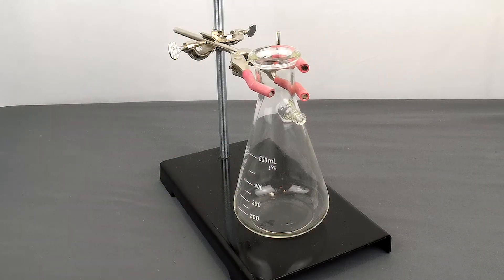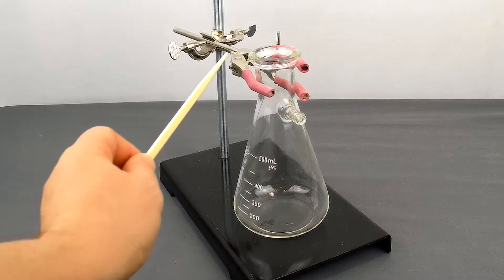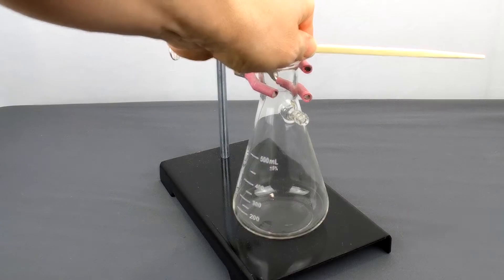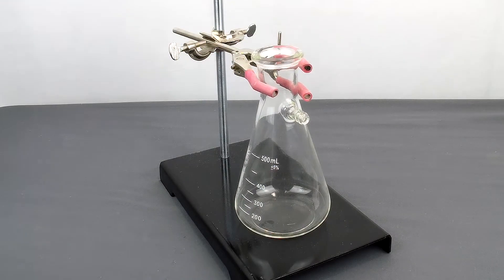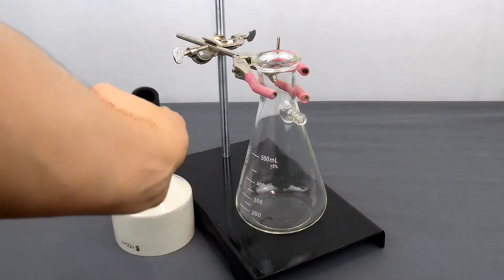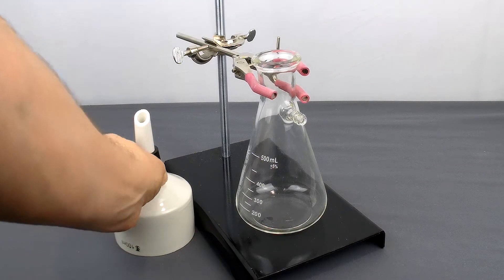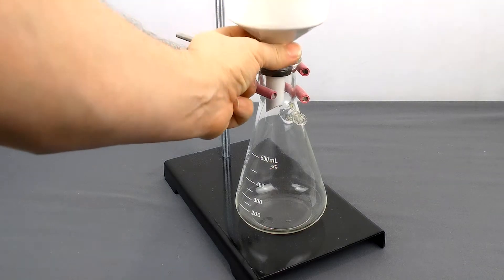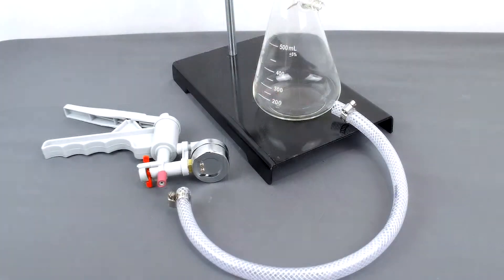The setup is very straightforward. We recommend a heavy support stand and a three-finger flask clamp just to hold the apparatus stable. When you place the Buchner funnel on top, the next thing you do is place the rubber stopper on the Buchner funnel and then just set it on top securely.